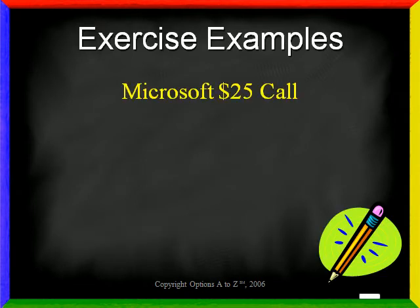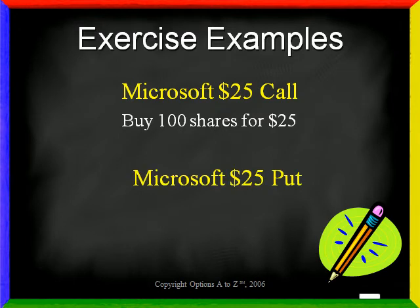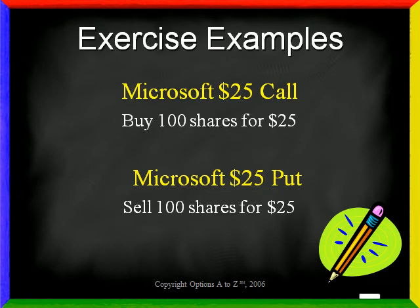For example, if you own a Microsoft $25 call and exercise it, you will buy 100 shares of Microsoft and pay $25 per share. If you buy a Microsoft $25 put and exercise it, you will sell 100 shares of Microsoft and receive $25 per share in cash.